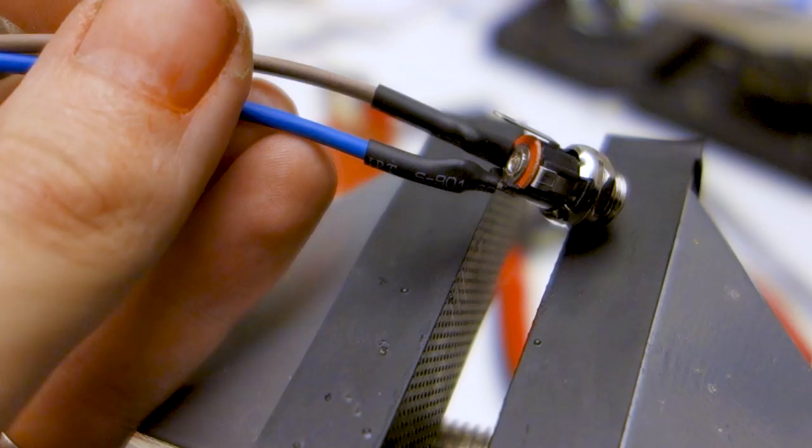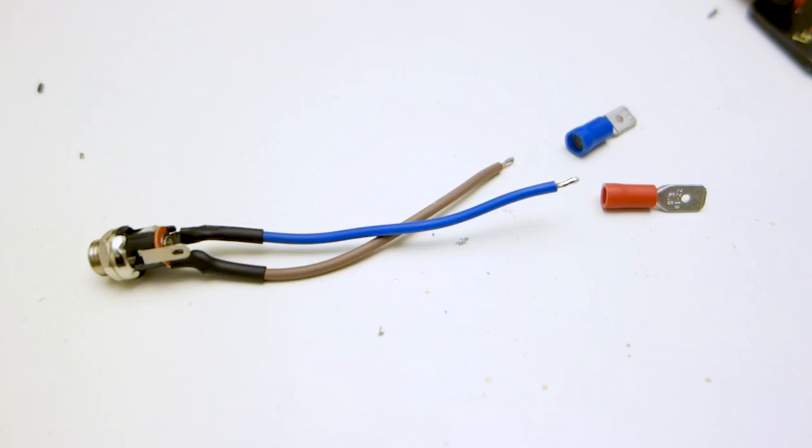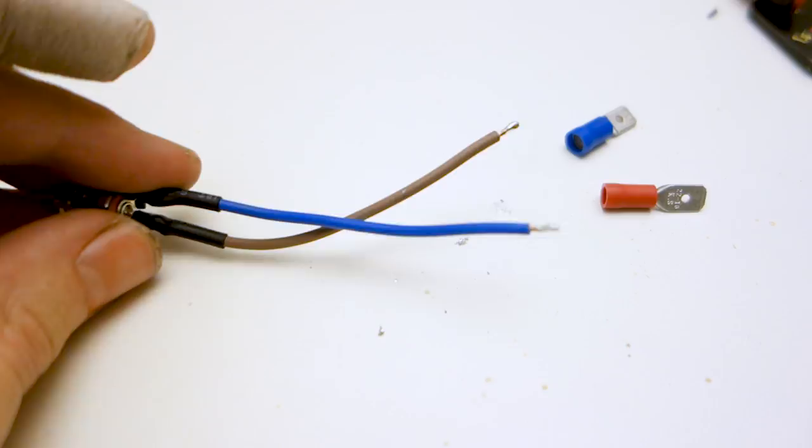Solder some wires through your barrel jack and attach a couple of connectors. I chose spade connectors, but screw terminals would work just as well if you're working with exposed wires.